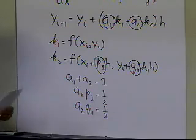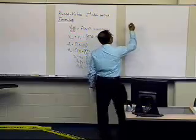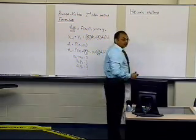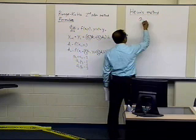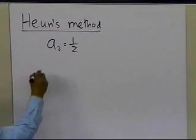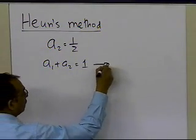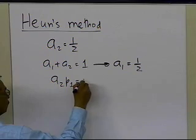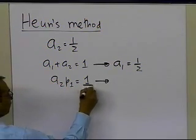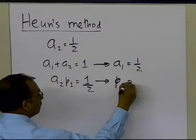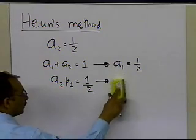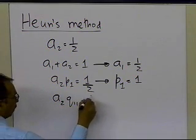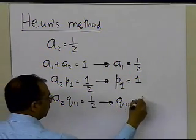Because we have three equations and four unknowns, one of the choices can be made freely. There are three popular choices. The first is the Heun's Method, where you choose a2 equal to one-half. With a2 equal to one-half, the equation a1 plus a2 equals 1 gives a1 equal to one-half. The equation a2 times p1 equals one-half gives p1 equal to 1. And a2 times q11 equals one-half gives q11 equal to 1.